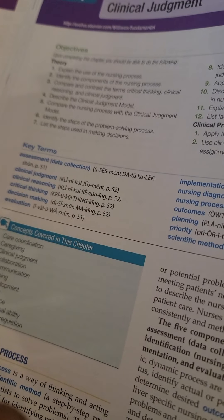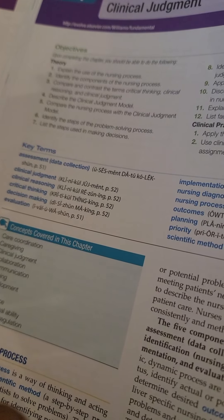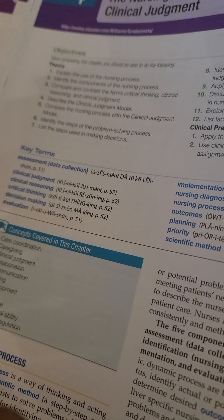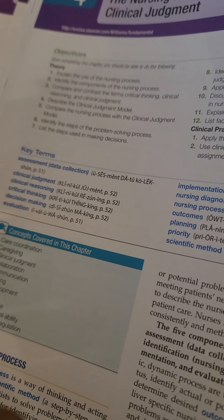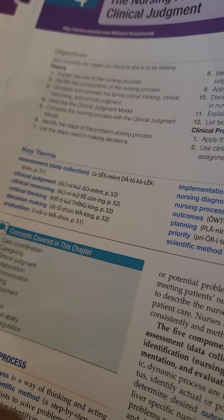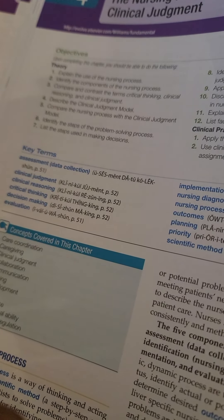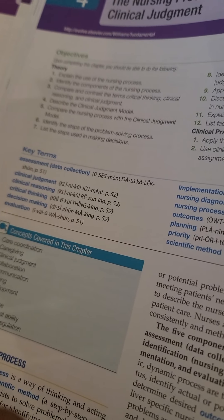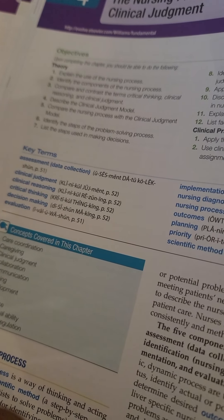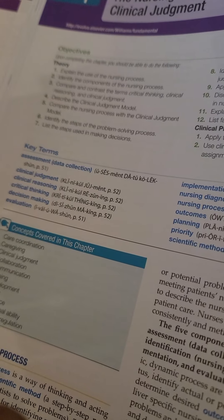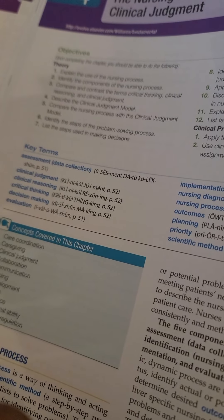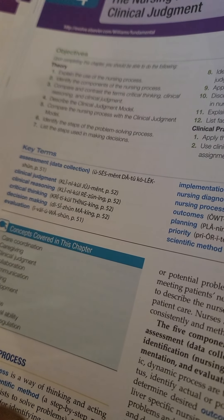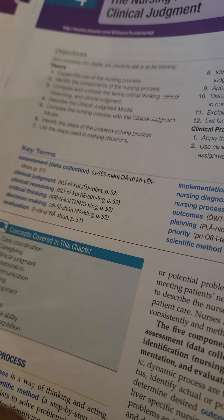Outcomes: results of actions. Planning: a series of steps by which the nurse and the patient set priorities and goals to eliminate or diminish the identified problems. Priority: is more important than something else is at the time. Scientific method: a step-by-step process used by scientists to solve problems.